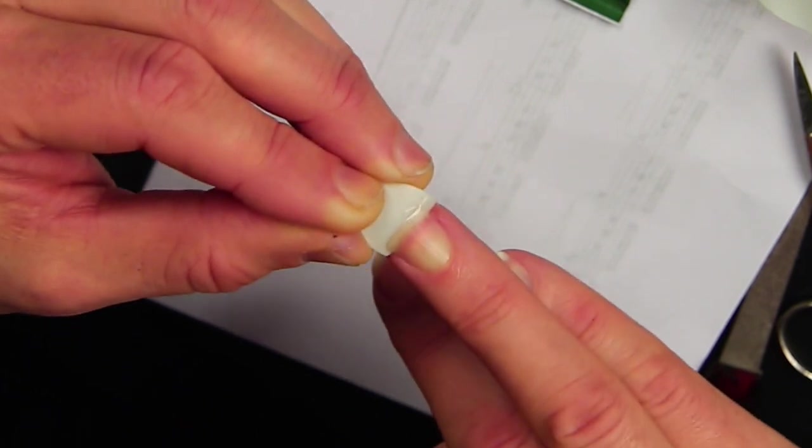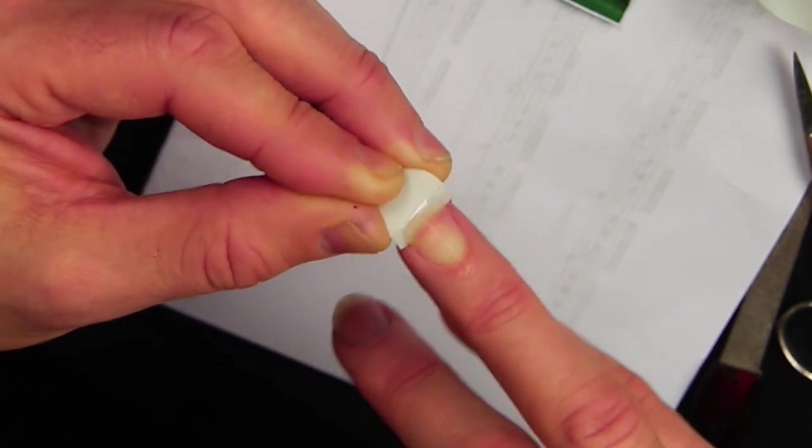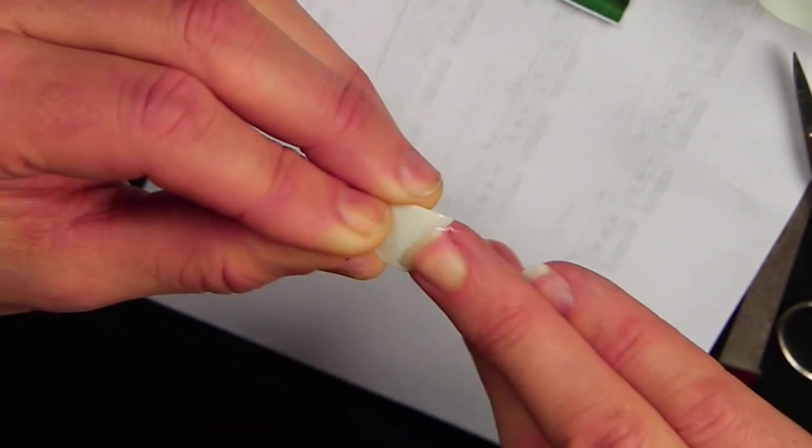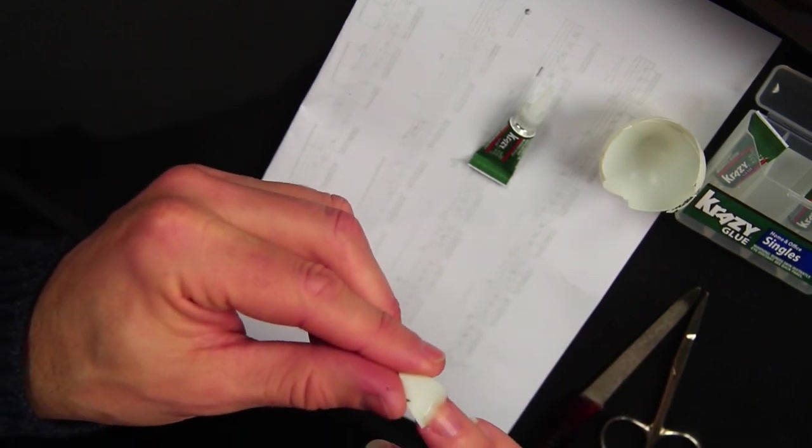So then we hold it there until it dries. We can blow on it, stick it in front of a fan, anything we need to do, so that it's there until it dries. So now this is set up here.